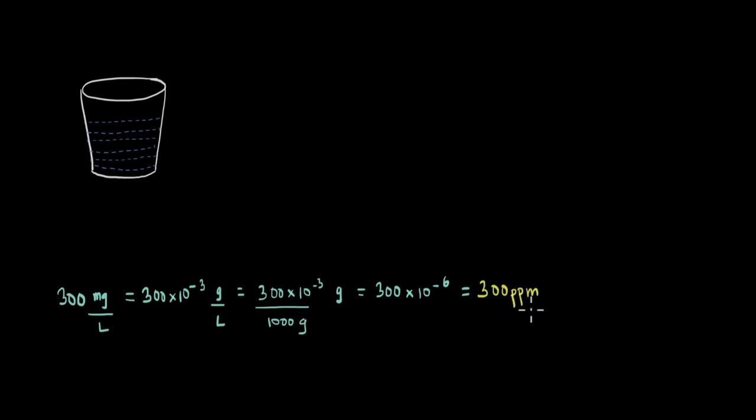If we have 1 ppm of something, it means out of 1 million units of that particular thing, we are picking out 1 unit.